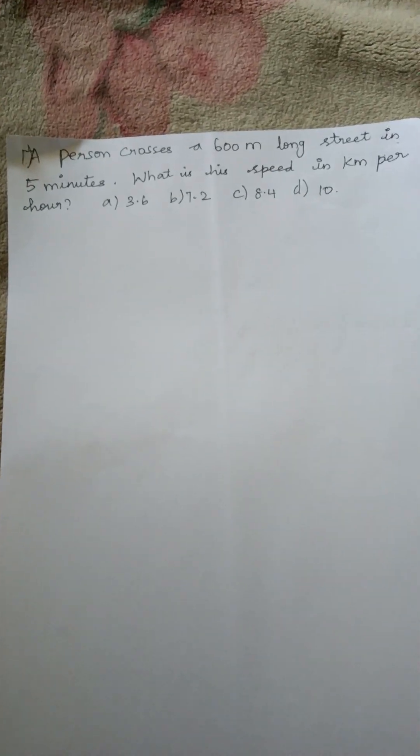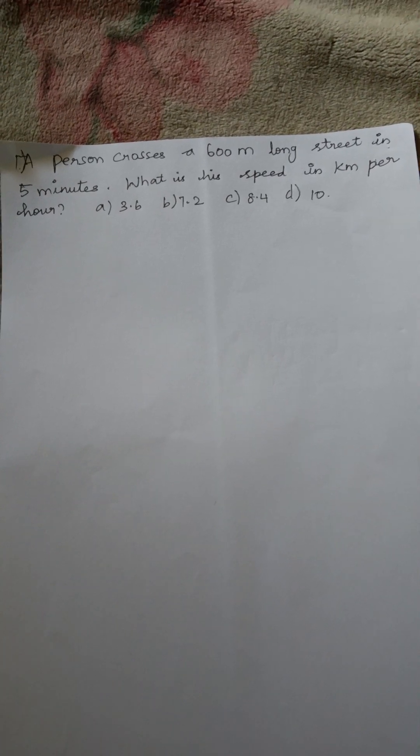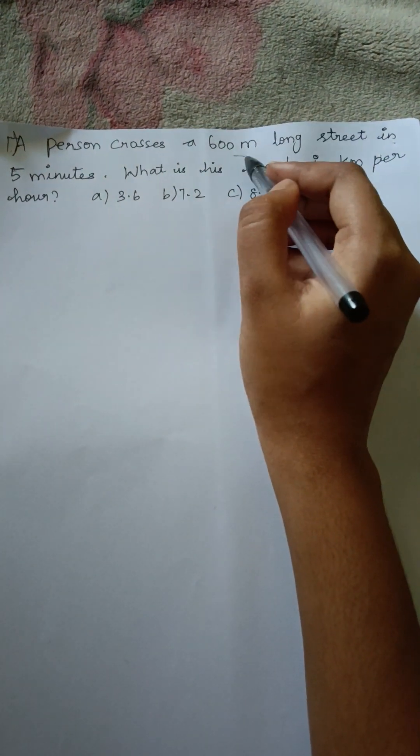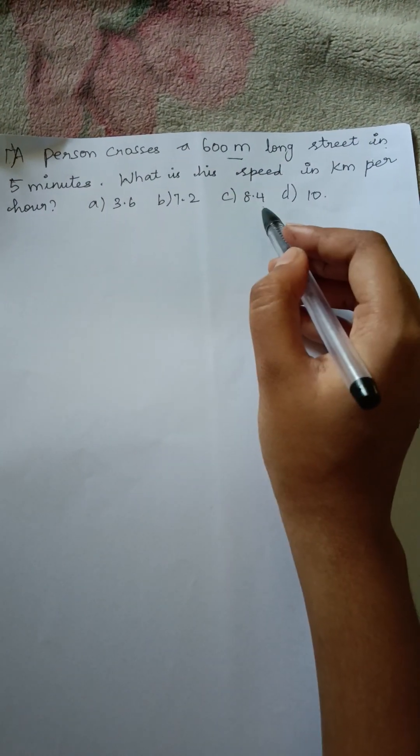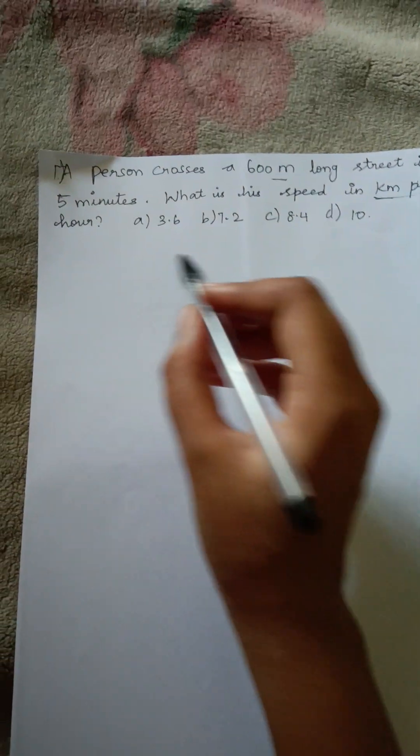These are the options. Now we are going to solve the question. A person crosses 600 meters. In the question they have given us meters but they are asking the answer in kilometer per hour.